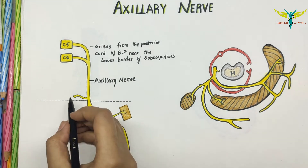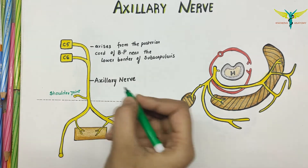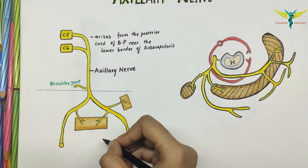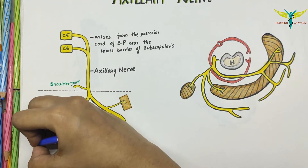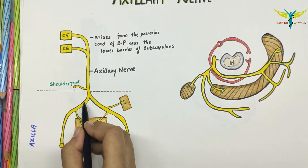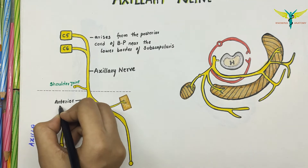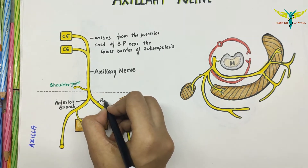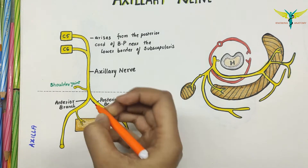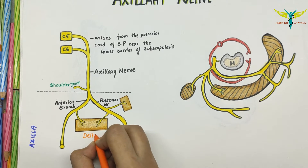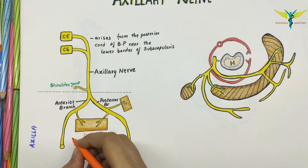The axillary nerve provides innervation to the shoulder joint, and in the axillary region it divides into the anterior and the posterior branch. The anterior branch gives a branch to the deltoid and innervates the skin of the lower half of the deltoid.